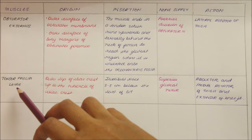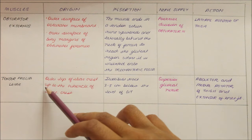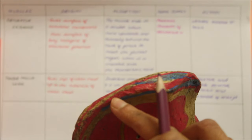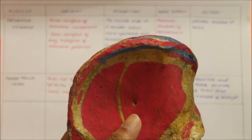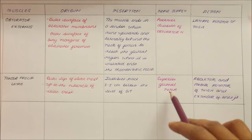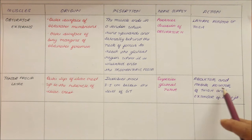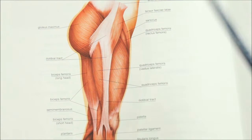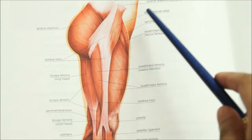Finally we have the tensor fasciae latae. It originates from the outer lip of the iliac crest up to the tubercle of the iliac crest and inserts into the iliotibial tract three to five centimeters below the level of the greater trochanter. It is supplied by the superior gluteal nerve, and its action is that it is an abductor and medial rotator of the thigh and an extensor of the knee joint. I hope you found this video helpful. To get updates on my latest videos, click on the subscribe button and tap on the bell icon. Thank you for watching.